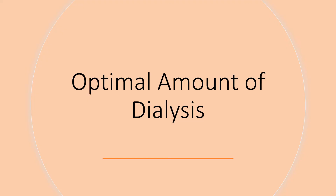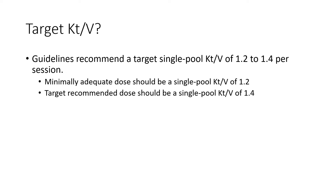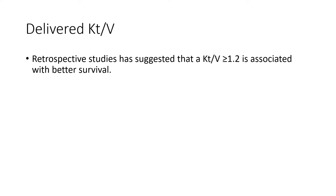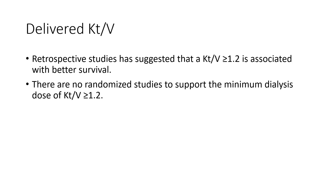Assuming we use Kt/V as our measurement of dialysis adequacy, what target is acceptable? Current guidelines recommend a minimum single pool Kt/V of 1.2 for patients and a target of 1.4. If most dialysis patients in a unit don't achieve a Kt/V of 1.2, CMS may implement a financial penalty on that dialysis unit. The problem is that these recommendations are based on a paucity of data — retrospective studies have suggested that a Kt/V equal to or greater than 1.2 is associated with better survival, but there are no randomized studies to support the minimum requirement of Kt/V ≥ 1.2.